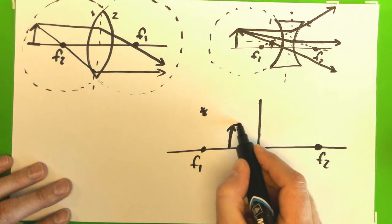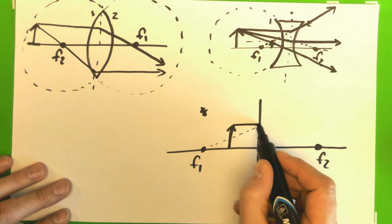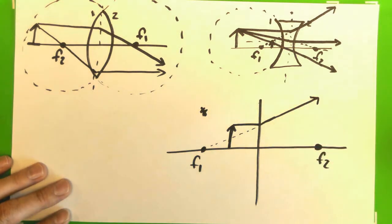So I'll have a parallel ray come in, hit, and it goes out as if from this first focal point. That's the same.